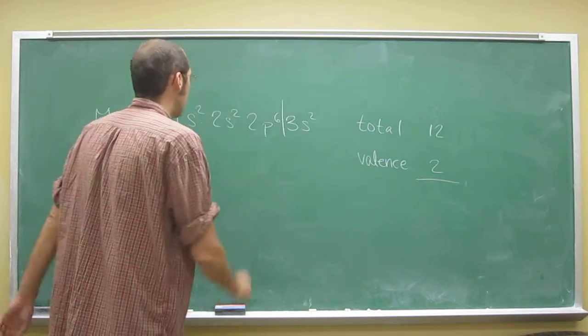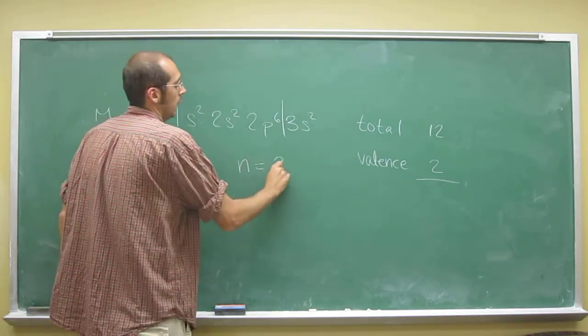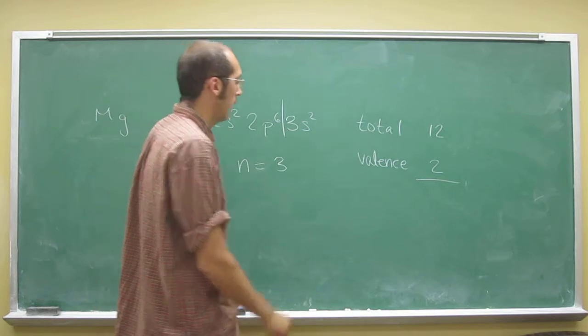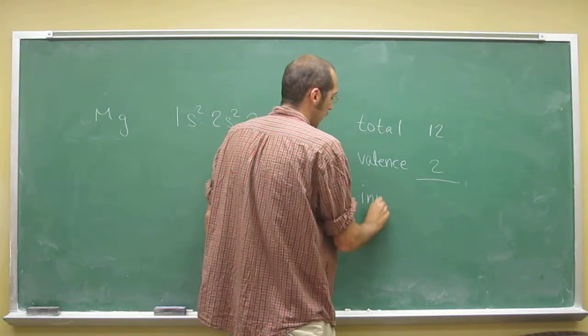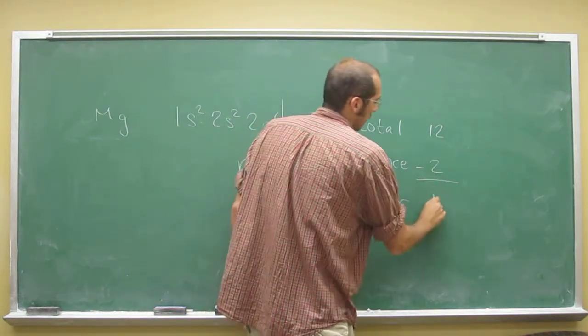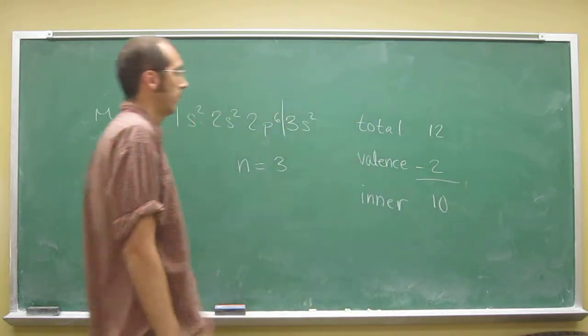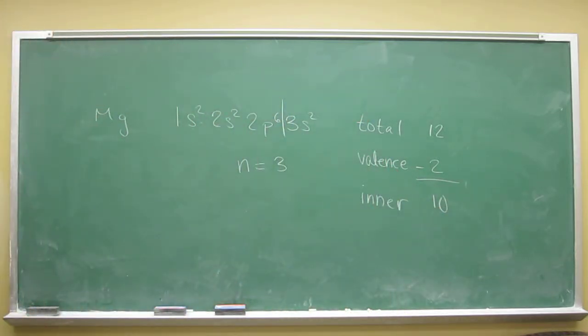So what's the energy level? M equals 3. And if you wanted to know the inner electrons, I know it doesn't ask that. Those are, of course, at the lower energy levels.